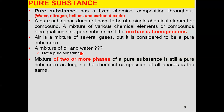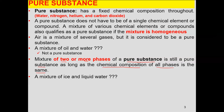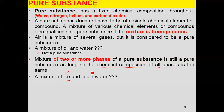Moving on: a mixture of two or more phases of a pure substance is still a pure substance, as long as the chemical composition of all phases is the same. For example, a mixture of ice and liquid water — is it a pure substance? Yes, because ice is in the solid phase and water is in the liquid phase, but the composition of both is H₂O.